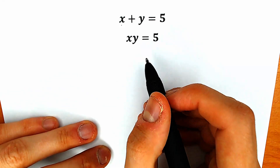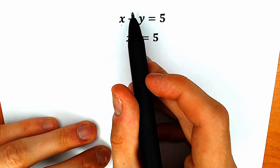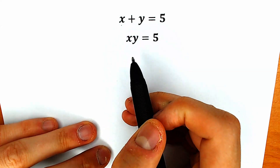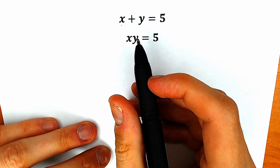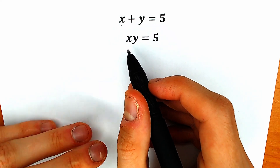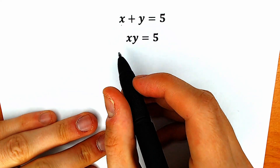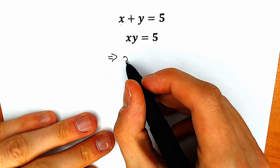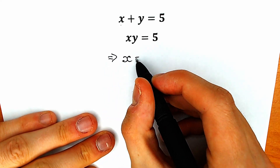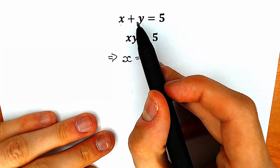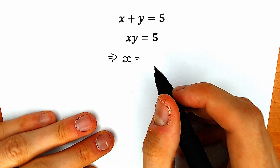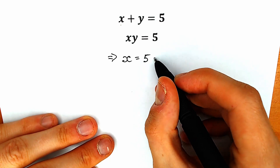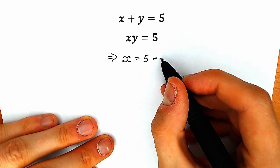So how can we solve this question? First of all, let's look closely at our first equation: x plus y equals 5. From here, let's express x. So x is equal to 5 minus y — we just subtract y from both sides.